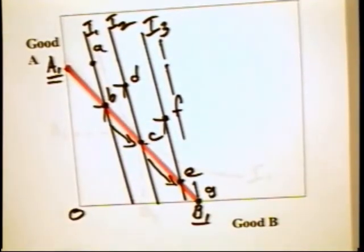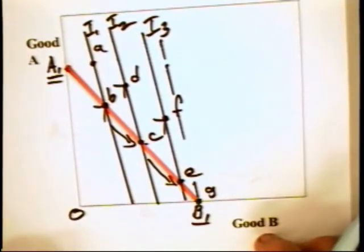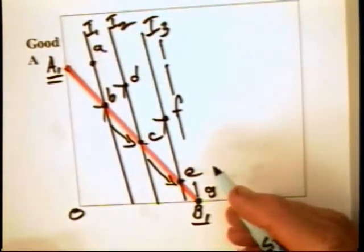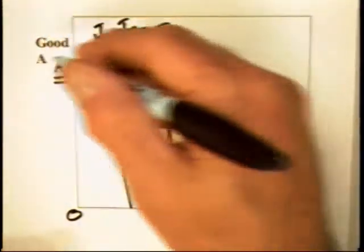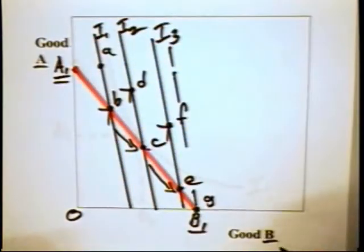Now, economists tend to rule out such indifference curves simply because we're trying to develop a very simple model of consumer behavior as represented by two goods, A and B.